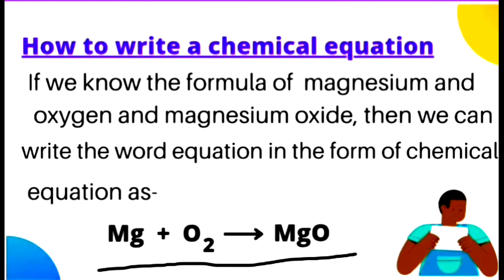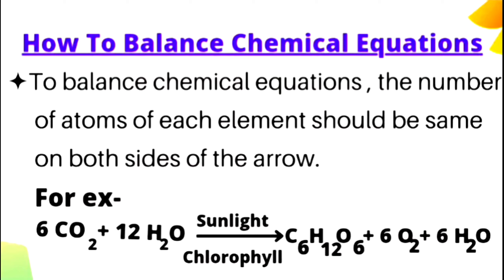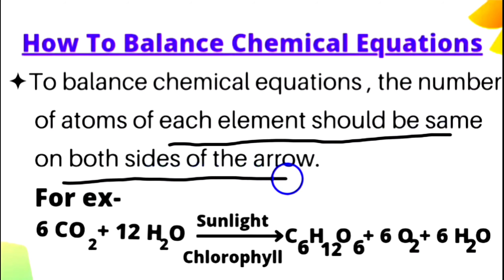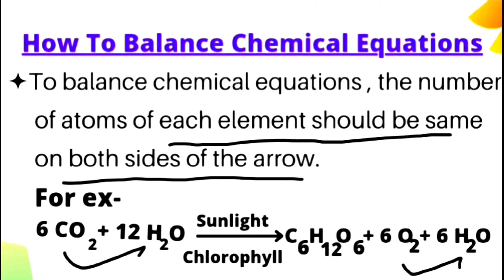Now the topic is: how to balance chemical equations. Yeh bahut important baat hai ki chemical equation ko kaise balance kiya jaye. Iske liye sabse important rule yeh hai: to balance chemical equations, the number of atoms of each element should be the same on both sides of the arrow. Reactants mein jitne bhi atoms involved hote hain, products mein bhi utne hi same atoms hone chahiye — tabhi equation balance ho paati hai.